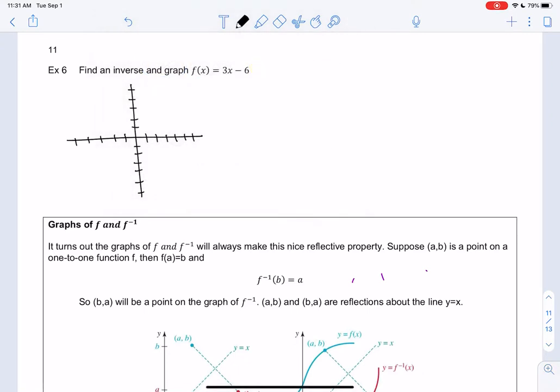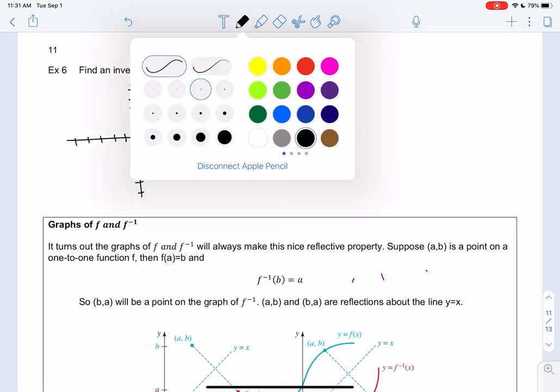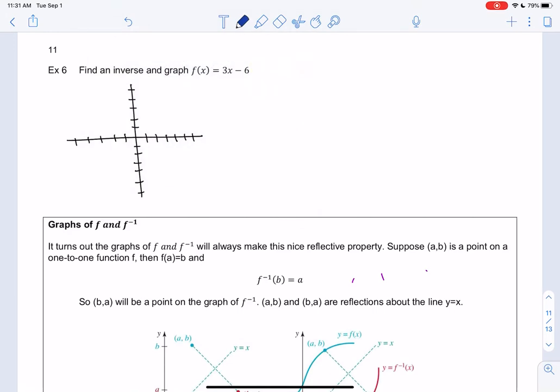You can make a table, but I'm going to use slope and y-intercept to go a little faster. I'll start at negative 6: 0, negative 6. We're going to go up 3 over 1. That should be enough to draw a straight line. So that's f(x) = 3x - 6.